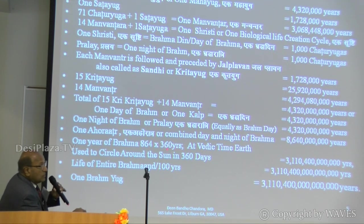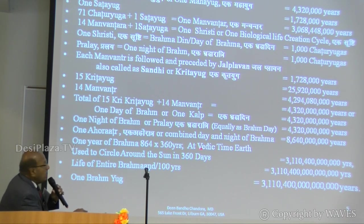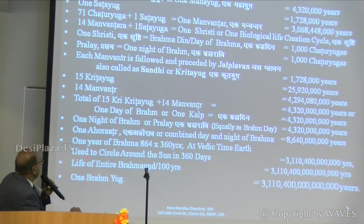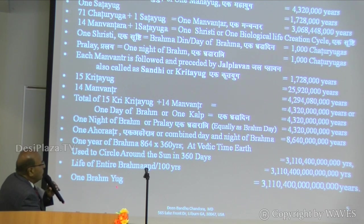Why 360 years? Because at the Vedic time, Earth used to take 360 days to circle around the Sun. The life of entire Brahman of 100 years comes to 3 trillion plus years. That is called one Brahma Yuga.